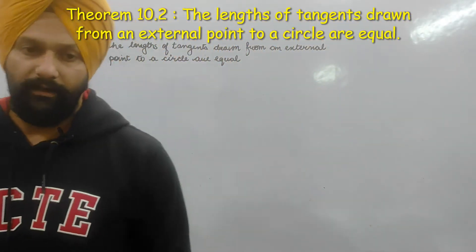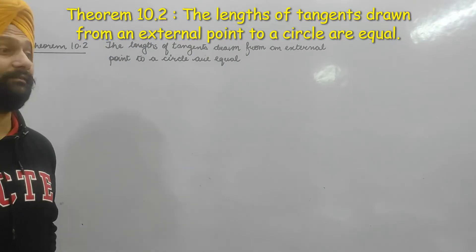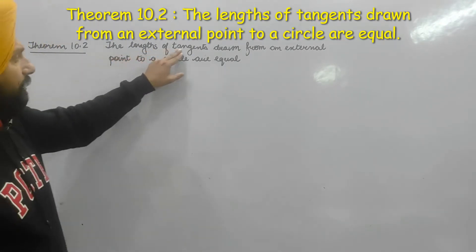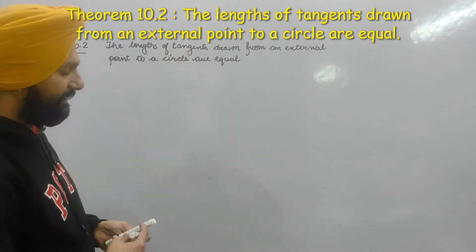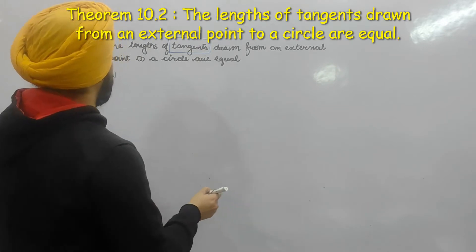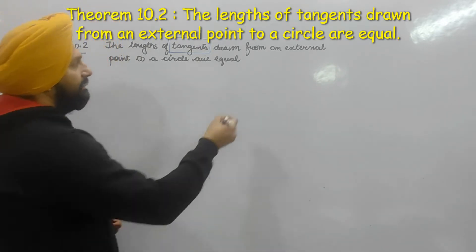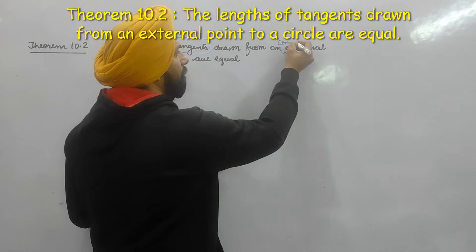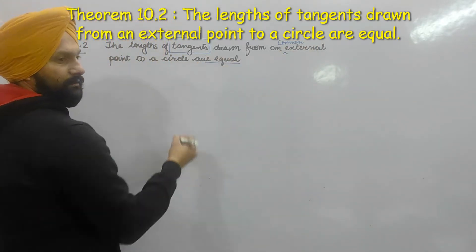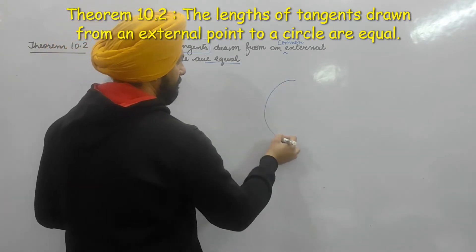I have to say, please understand the length of tangents. Where is the length of tangents drawn from an external point? Here we have to write drawn from a common external point are equal. If this is my circle, please understand.